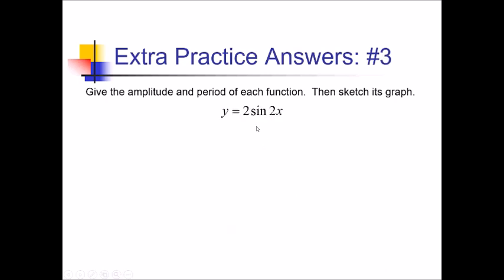For this one, let me give the amplitude and period of the function and then graph it. For amplitude, this 2 out in front of the trig function gives us that, so our graph is going up and down by 2 from the center. Now for the period, we have to do 2π divided by this b value being multiplied by the x, so 2π divided by 2 gives us a period of π.